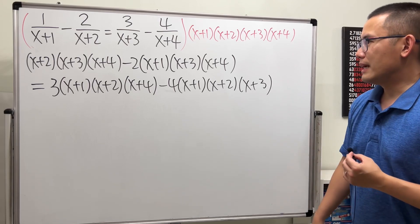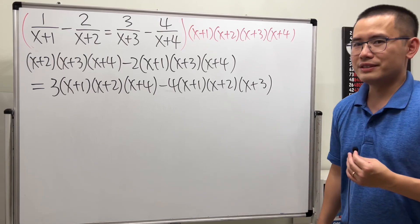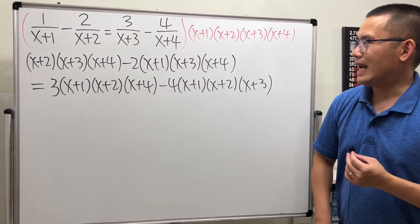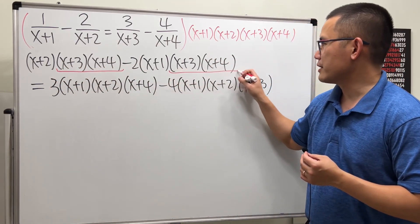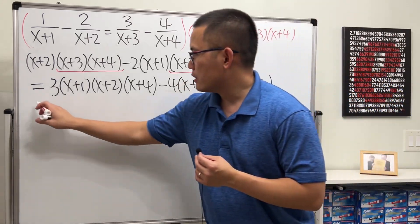So, up to this point, you might be like, should we multiply out everything? No, I will factor things out because we notice that this and that, they are the same, so we can factor it out. So let me put that down, x plus 3 times x plus 4.